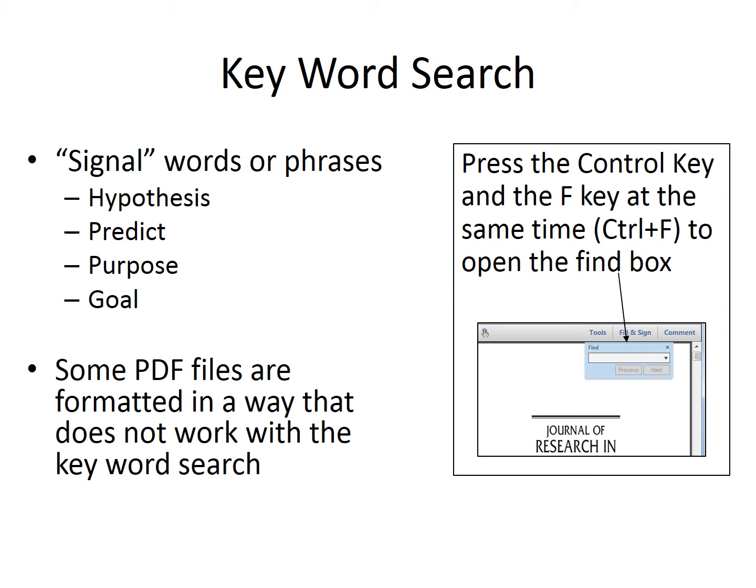That can be really helpful when we know the authors use certain keywords when writing about particular things. For example, when we're learning about the focus of the article, you can look for the words hypothesis, predict, purpose, and or goal.